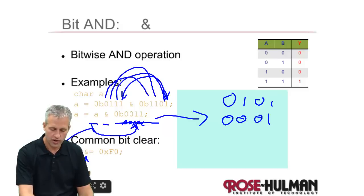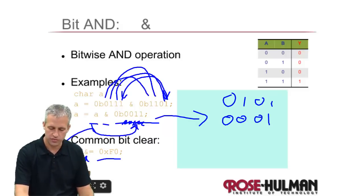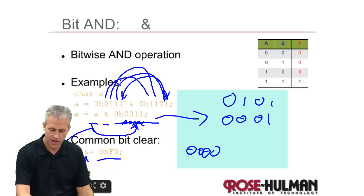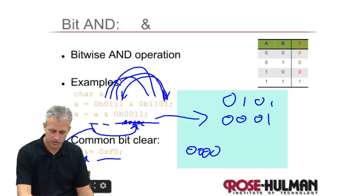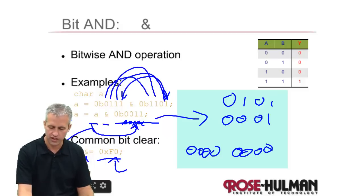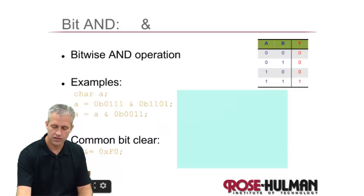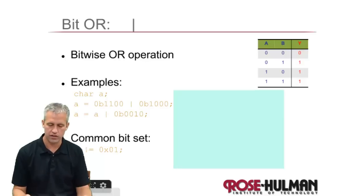You can also use the bitwise AND with shorthand notation, and you can use it with hex just as easily as binary. For example, this operation results in the top being all zeros — because of value A whose top is all zeros — and the bottom being all zeros because of 0x0F. So this actually results in zero in the end. Bitwise just means do it one bit at a time.